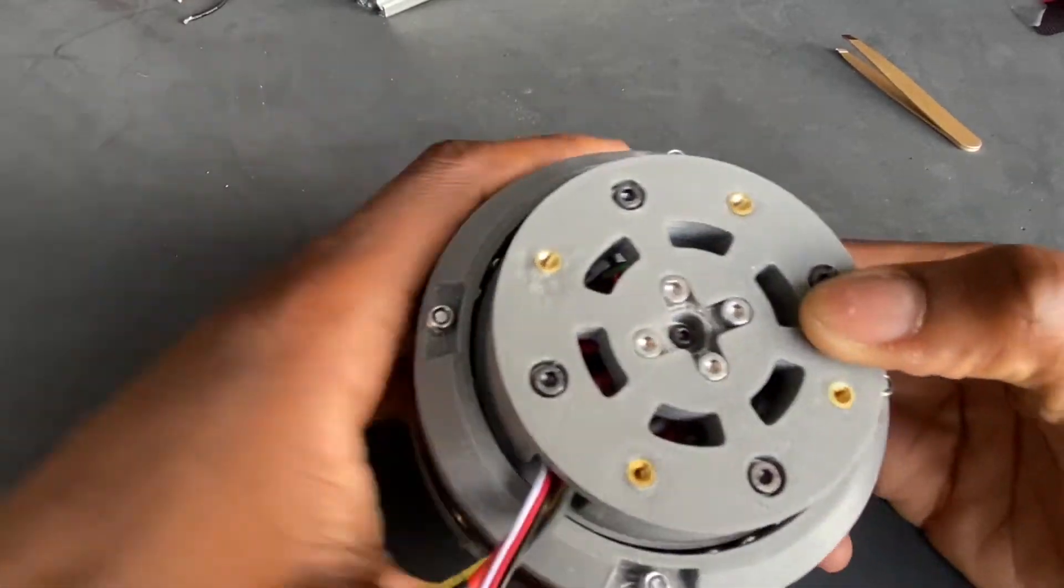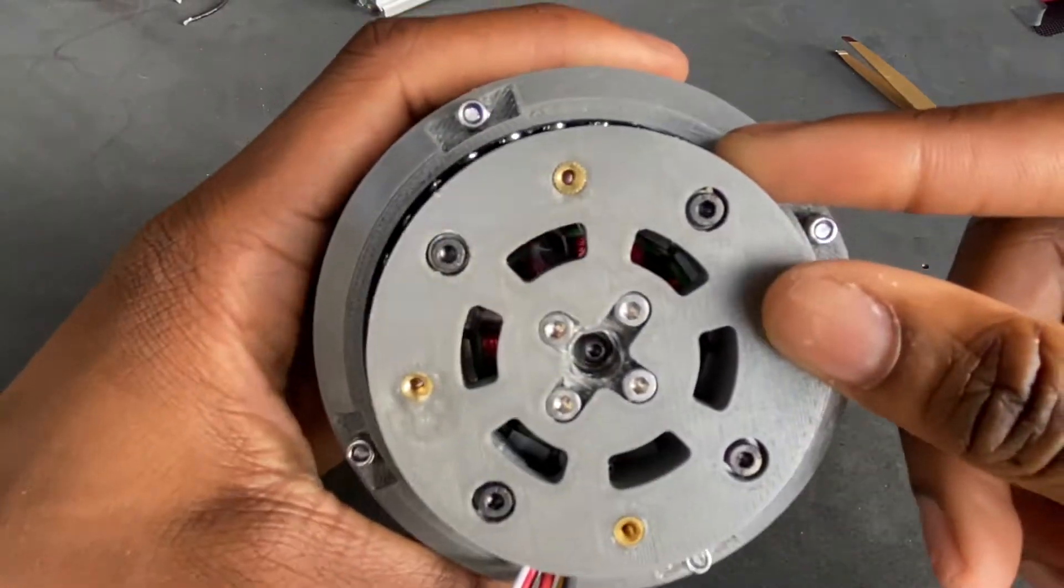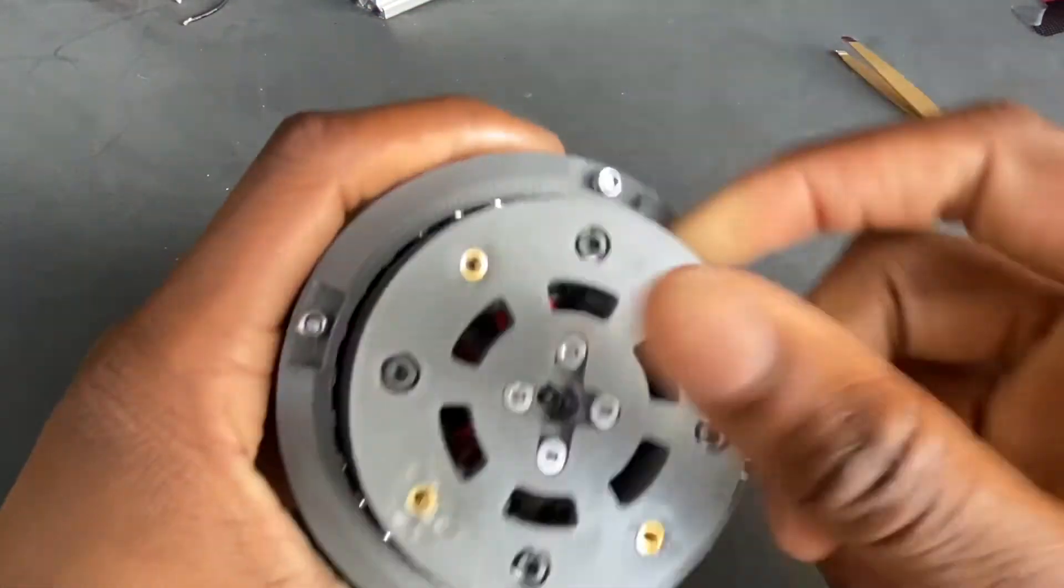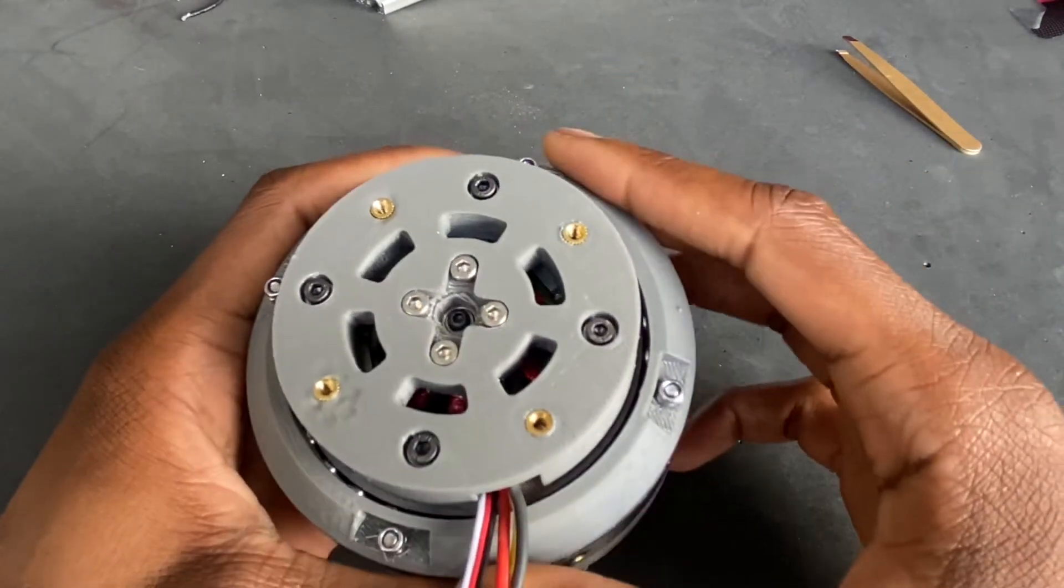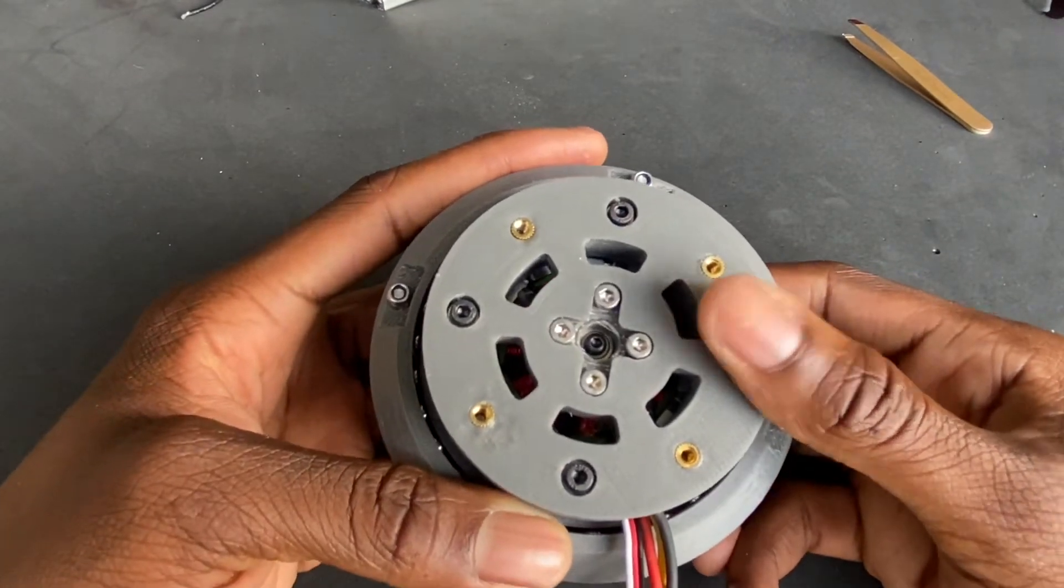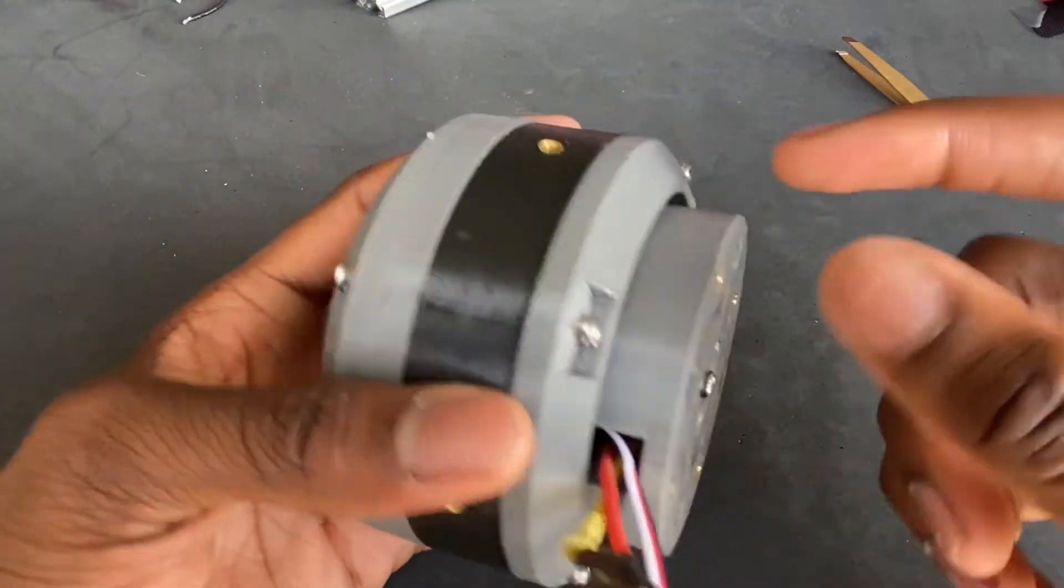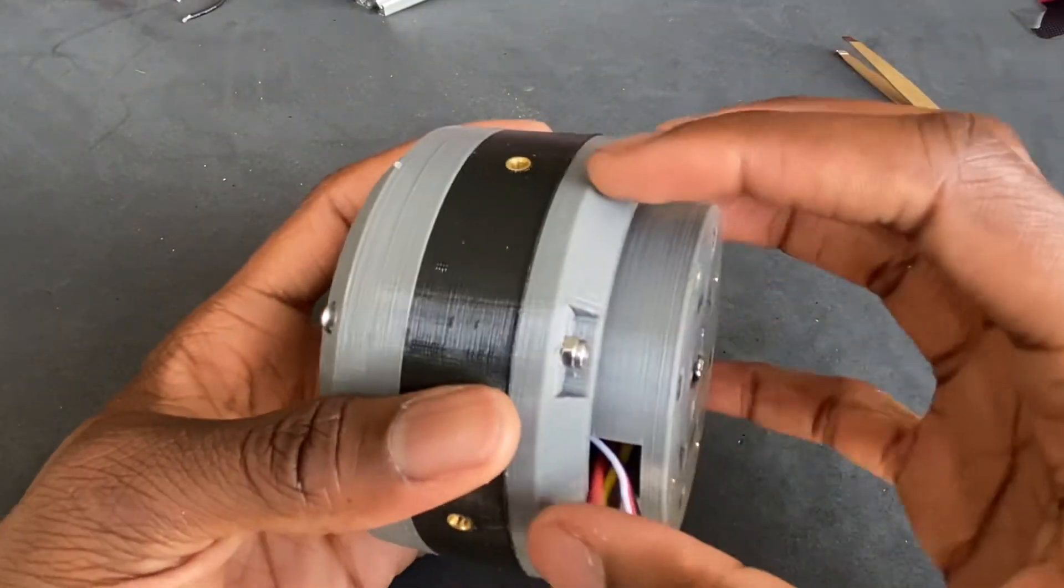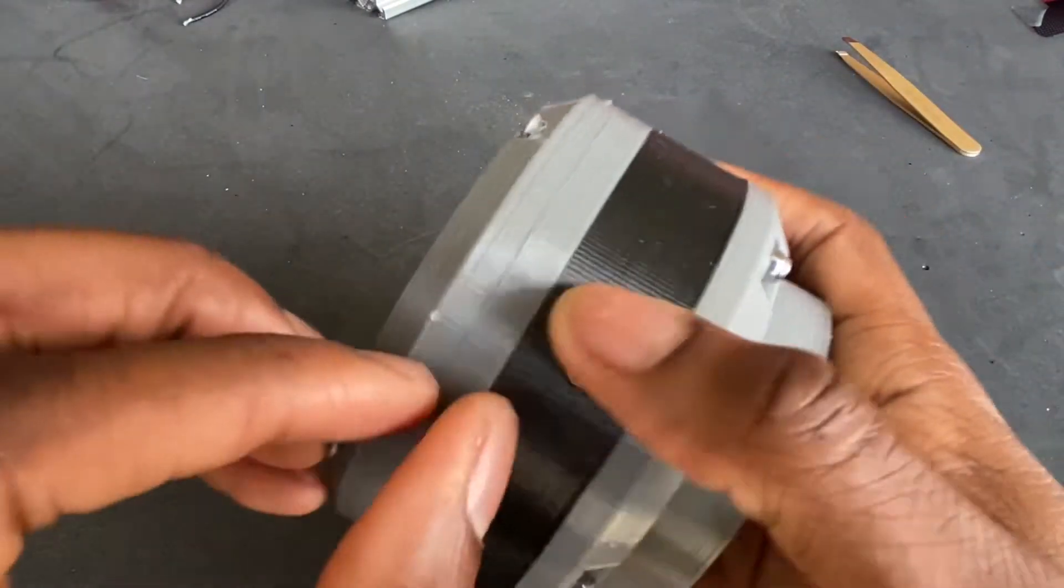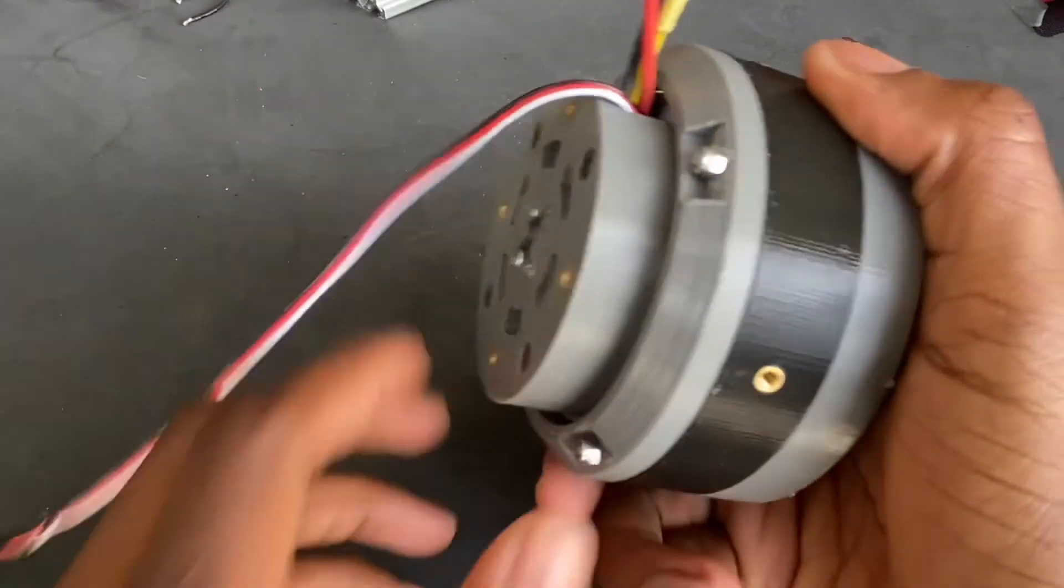It also uses some 3D printed bearings. So you can kind of see the ball bearings in there. There weren't any that were big enough, wide enough that I saw that I could get on Amazon that weren't too expensive. So I decided to go ahead and 3D print my own. And so they work pretty well. There's two sets. So one of the bearings is here at the bottom. And then one is also here at the top. It's this little layer there. So that's what this is.